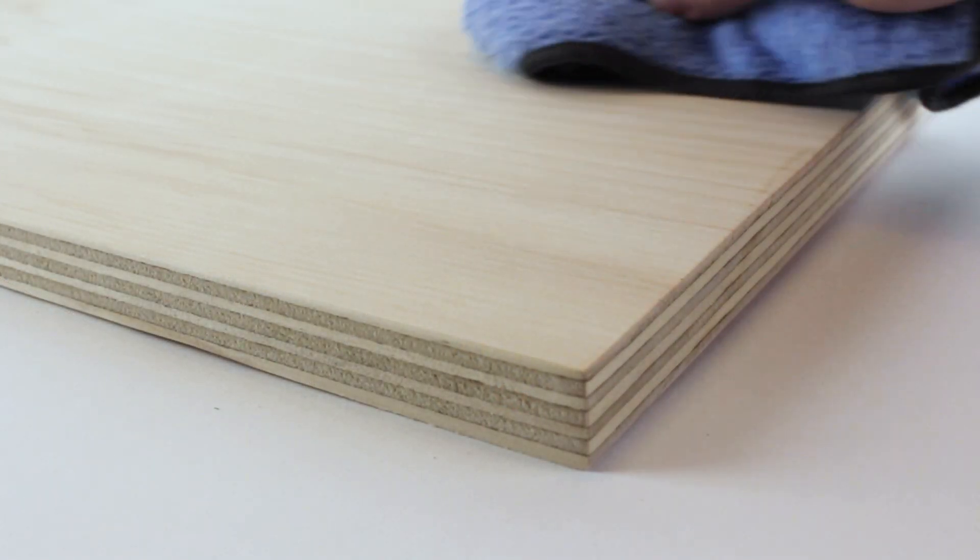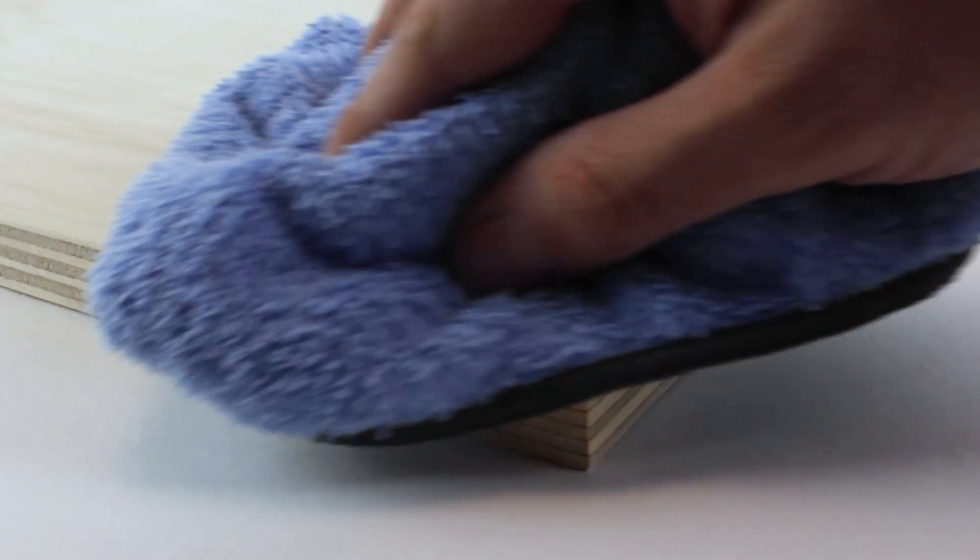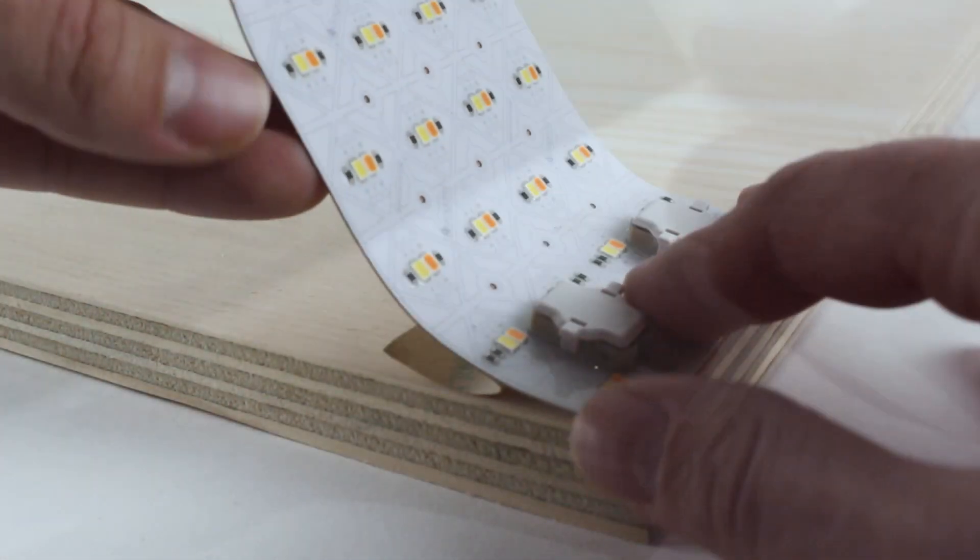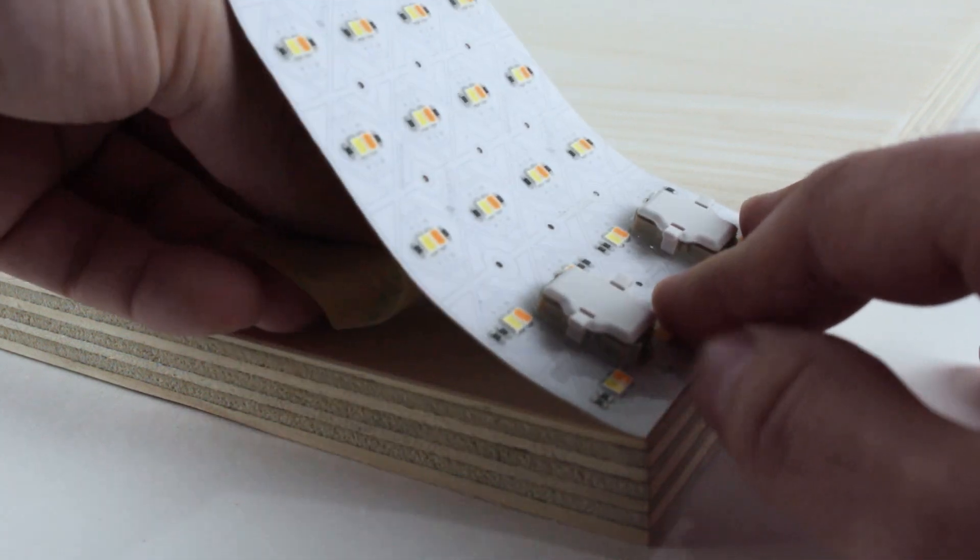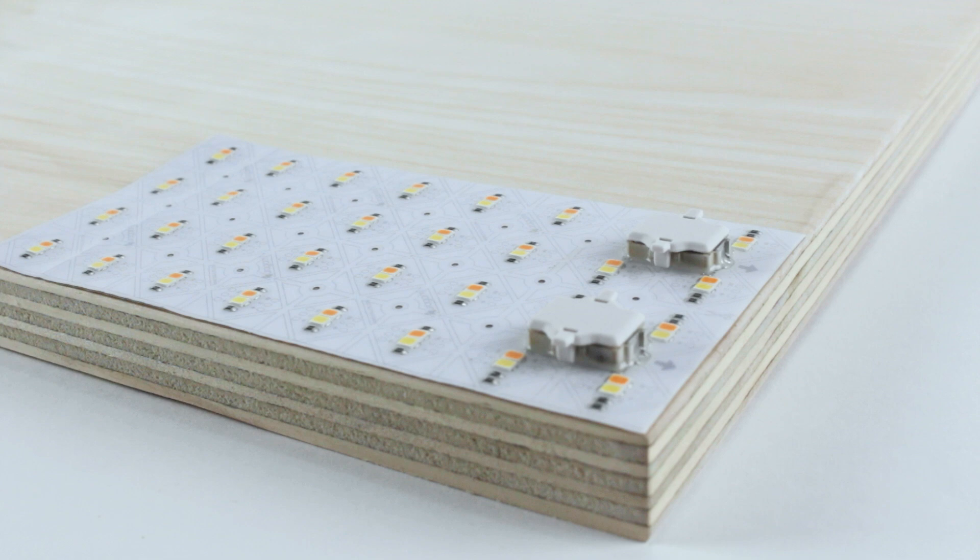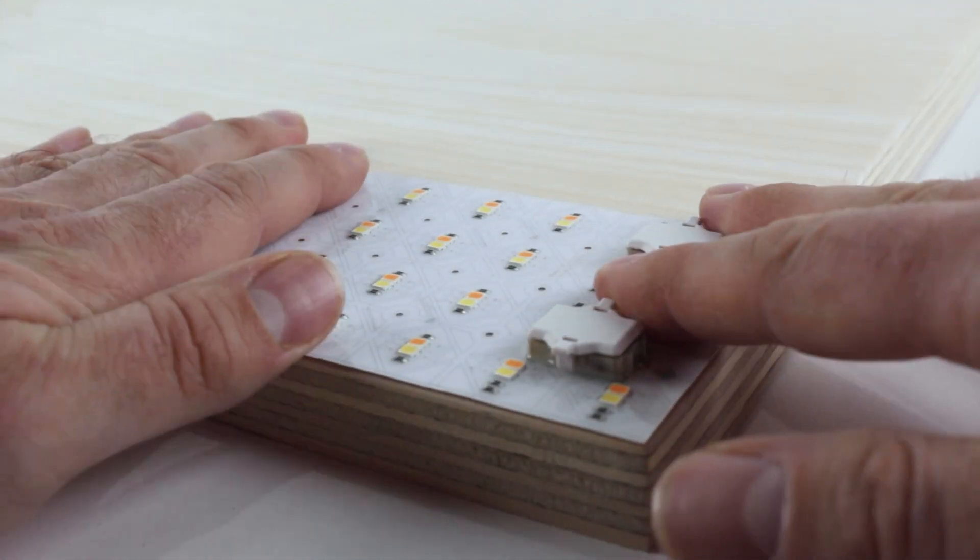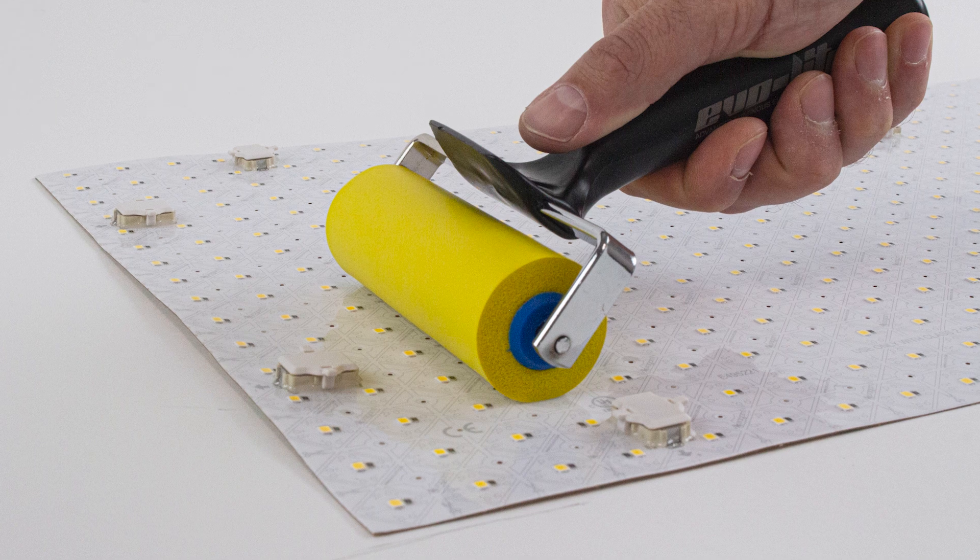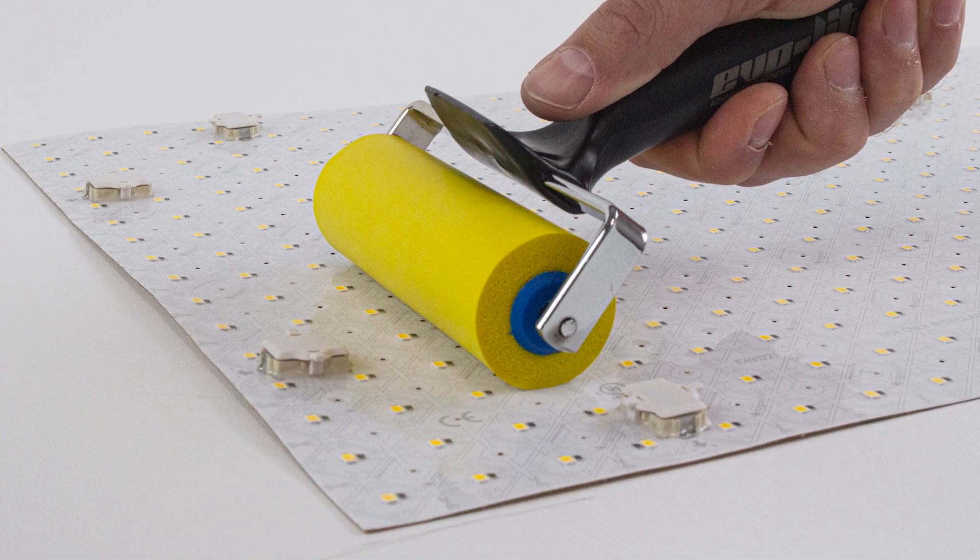To mount origami, get started by thoroughly cleaning the mounting surface. Next, peel back an edge of the adhesive backing film. Line up the lightsheet and stick the edge to the mounting surface. Slowly peel the backing film away as you adhere the lightsheet to the surface, applying consistent pressure across the entire lightsheet. For best results, use the specialized origami installation roller.